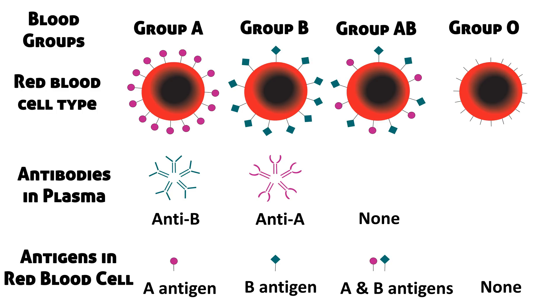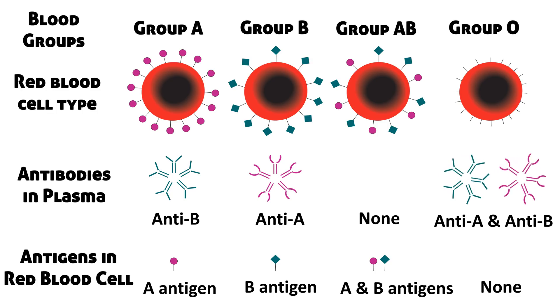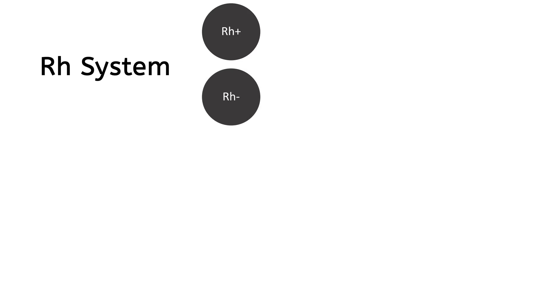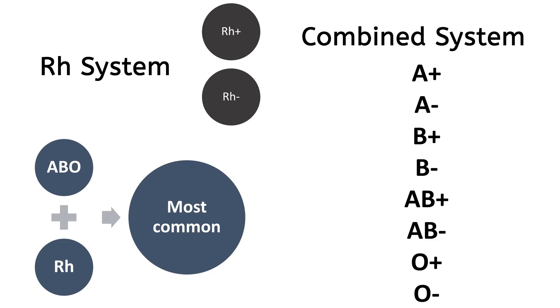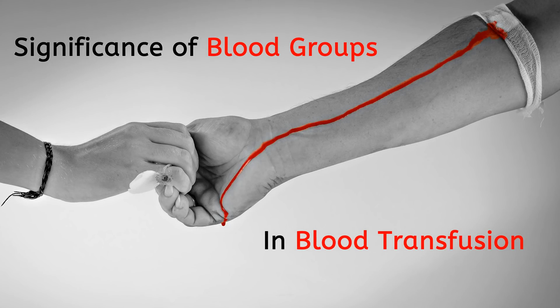People with blood group O have both anti-A and anti-B antibodies. In the RH system — where RH means Rhesus — red blood cells are either RH positive or RH negative. The combination of both the ABO system and the RH system is most commonly used worldwide, where ABO groups are combined with a plus or minus sign signifying RH status.